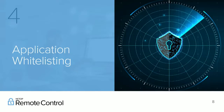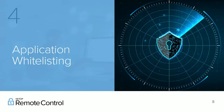Number four is application whitelisting. Authenticating users is important, but once you've confirmed who they are, it's important to place limits on what they can access. Companies have a variety of internal and external users — vendors, contractors, and employees — who need to remotely access resources. But the computers they access don't run just one application. You don't want the company servicing your printers to access your payroll system.